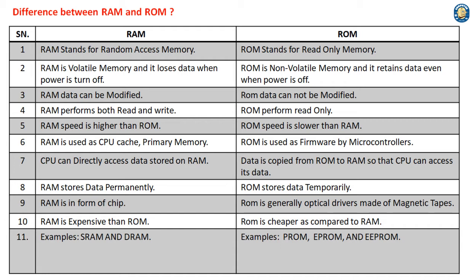6. RAM is used as CPU Cache. ROM is used as firmware by microcontrollers. 7. CPU can directly access data stored on RAM. Data is copied from ROM to RAM so that the CPU can access its data.